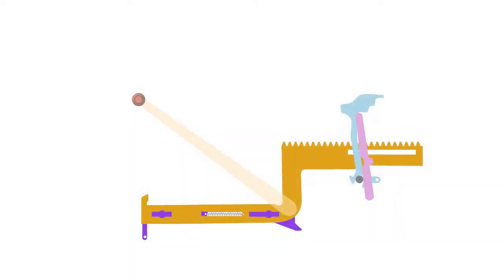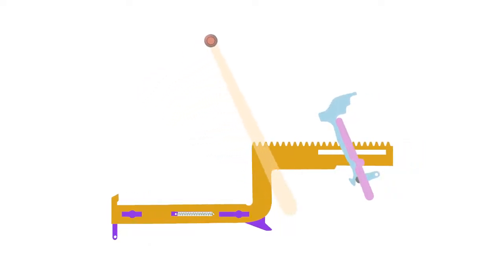As the return stroke progresses, the type hammers are rotated forwards, returning to their original position.